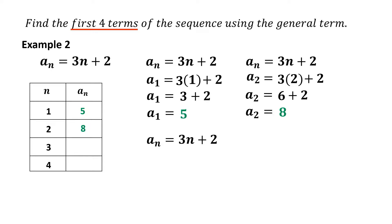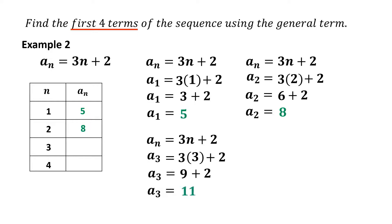Finding the third term using a sub n equals 3n plus 2. Substitute n equals 3: a sub 3 equals 3 times 3 plus 2 equals 9 plus 2 equals 11. Therefore, the third term of the sequence is 11.